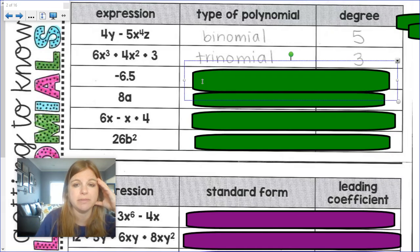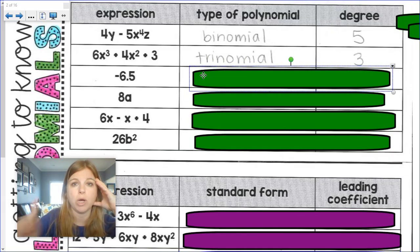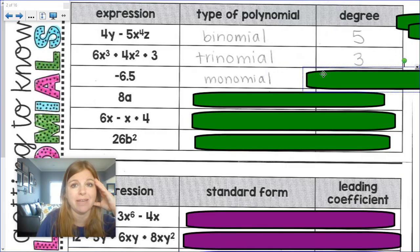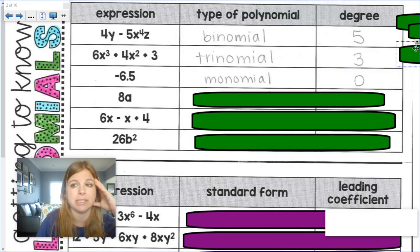Next term, negative 6.5. One term, so it's a monomial degree. I don't see any variables, so that means my degree is 0.